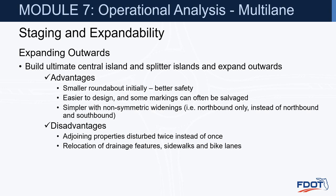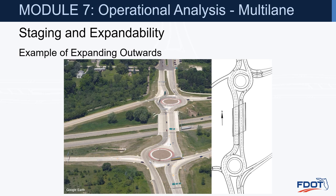Expanding outwards means building the ultimate center island and splitter islands and then expanding outward. Advantages: smaller roundabout initially with potentially better safety, easier to design, and some markings can often be salvaged. It is simpler for non-symmetrical widenings. Disadvantage: adjoining properties are disturbed twice instead of once, and drainage features, sidewalks, and bike lanes may need to be relocated. An example shows a three-lane entry graphic where only two lanes were constructed initially, but the bridge was set up to allow for future expansion.